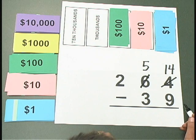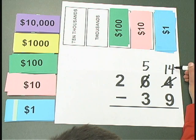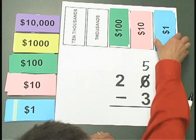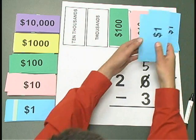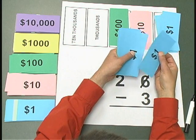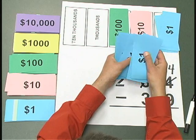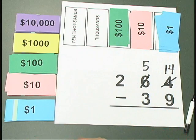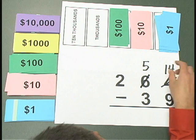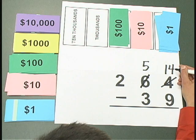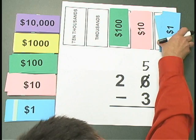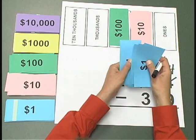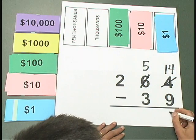Now we're ready to do the subtraction. We can do 14 take away 9 — I'm going to actually take away 9 of these 1s: 1, 2, 3, 4, 5, 6, 7, 8, 9. And 14 take away 9 leaves me with 1, 2, 3, 4, 5 — I have 5 ones left.